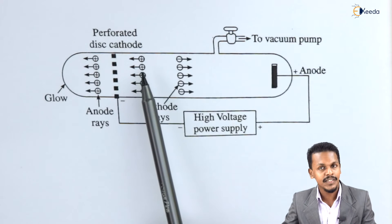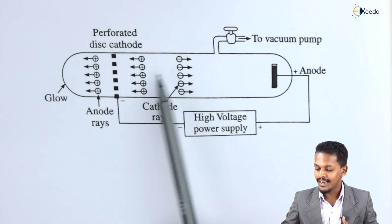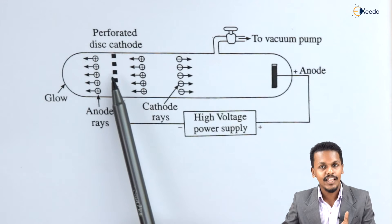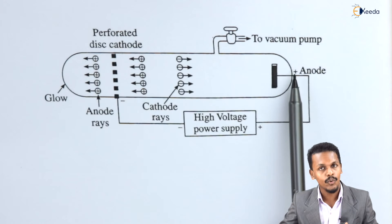And the negatively charged cathode ray will travel towards the anode.